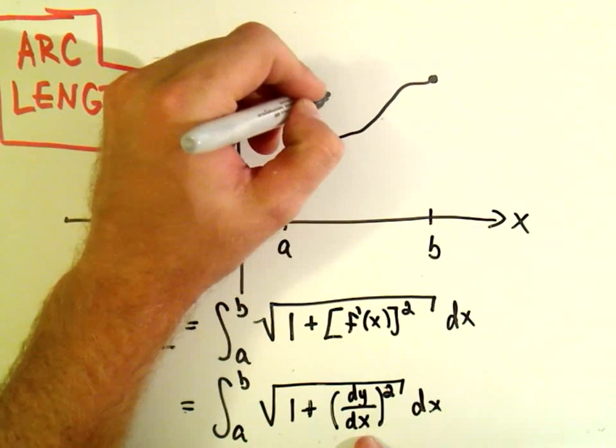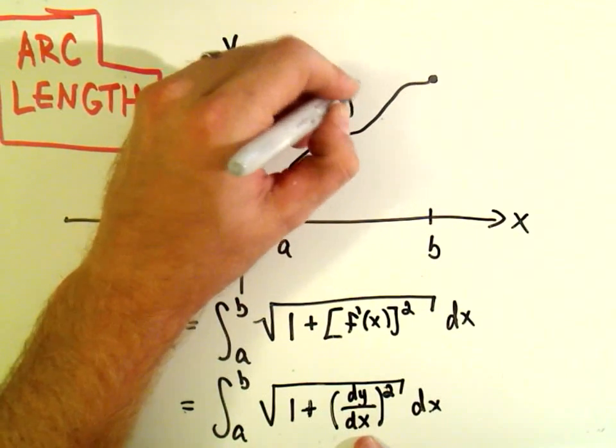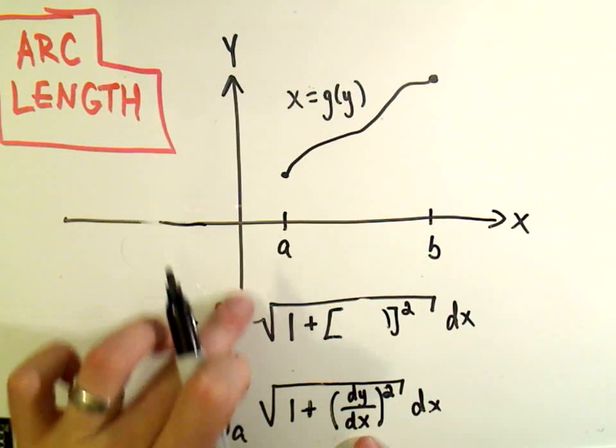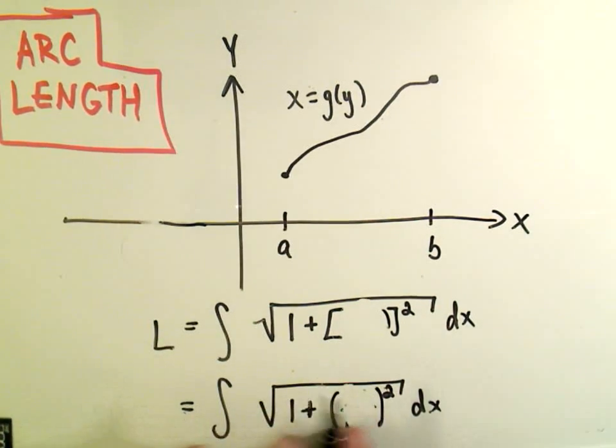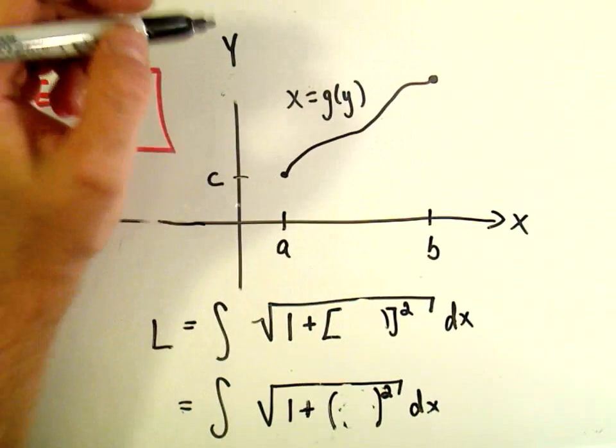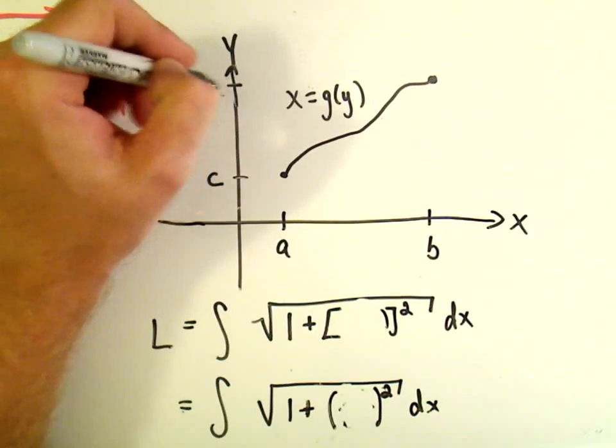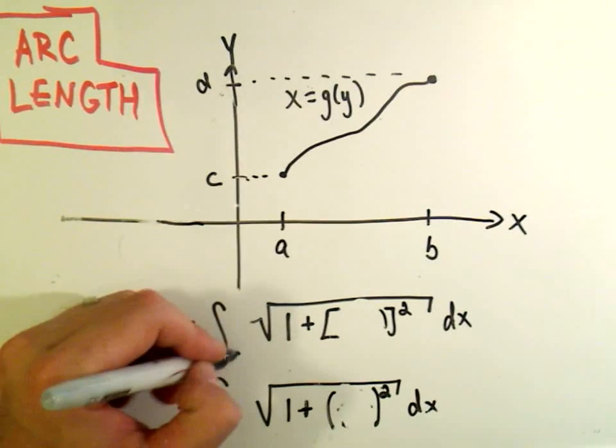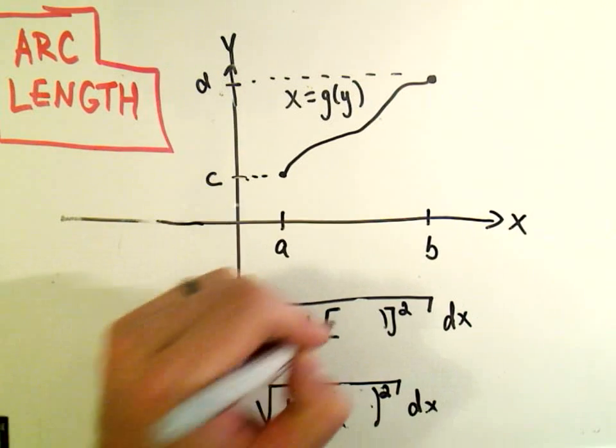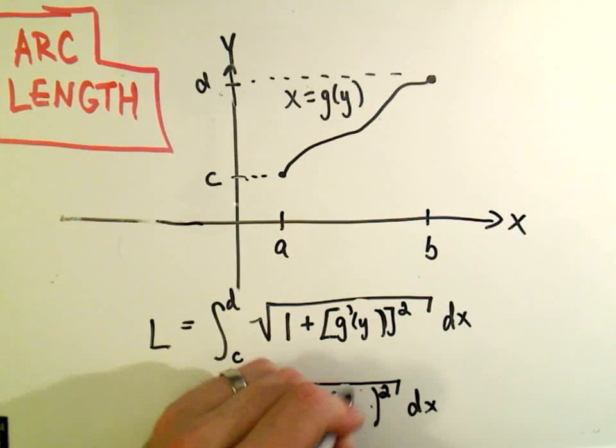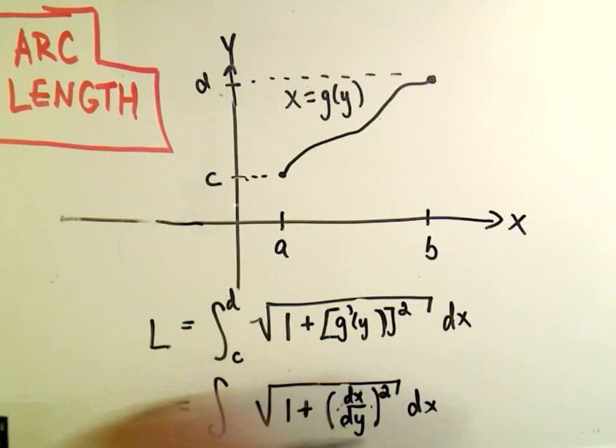If your function was in the form x equals g of y, so it's a function of y, a couple things would change. We would now need to know the limits of integration on the y-axis, the highest y value and the smallest y value. And then we would take the derivative of that function and square it, equivalently dx dy squared.